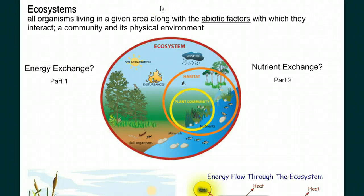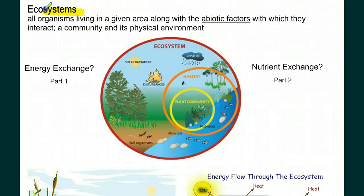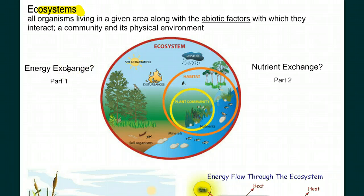Here in the last part of our ecology unit, we're going to focus in on ecosystems. The key part of that word being 'systems.' The ecosystem is all the organisms living in a given area, along with the abiotic factors with which they interact — it's a community and its physical environment. In part one of this video, we're going to look at the energy exchange throughout an ecosystem, and in part two, we'll look at the nutrient exchange.